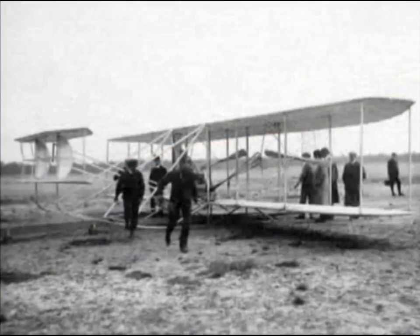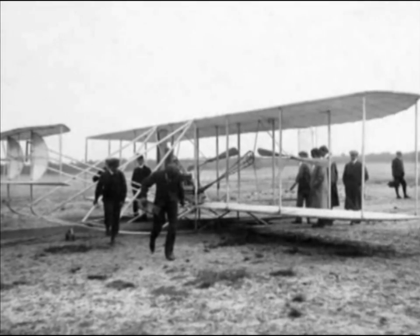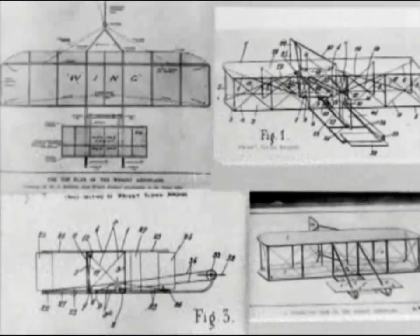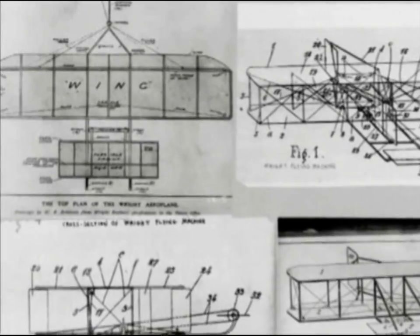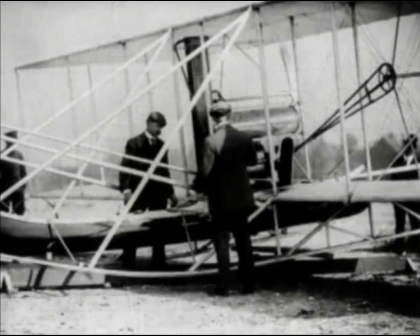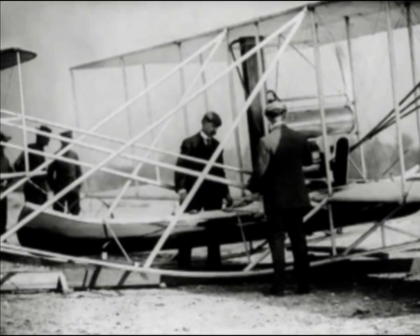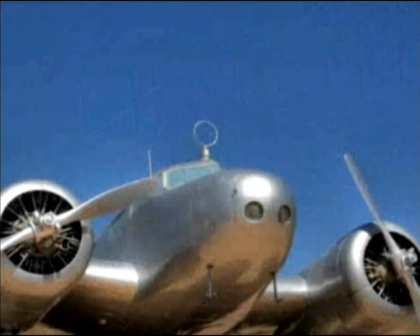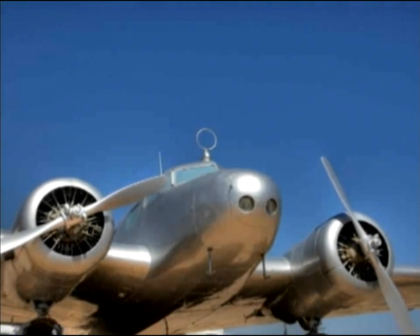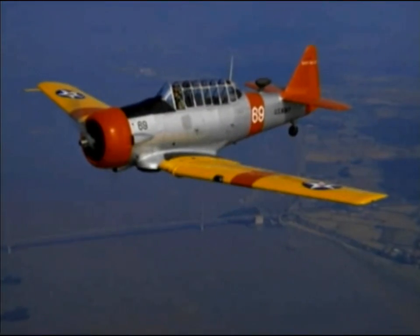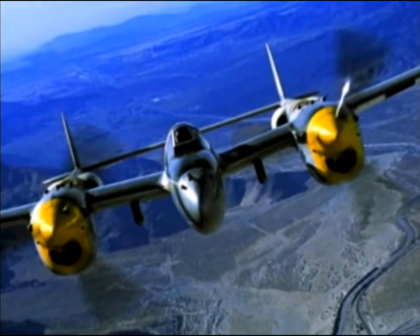In the beginning, the earliest heavier-than-air flying machines were made of the lightest materials available — usually wood for the frame and a cloth cover. With a few variations, the model persisted for many years. Then, following the First World War, aluminum became the material of choice and several all-metal craft were produced over the next decade.